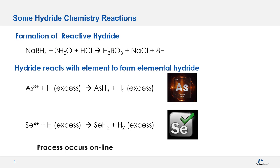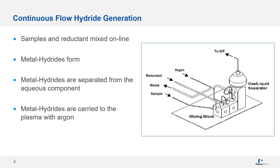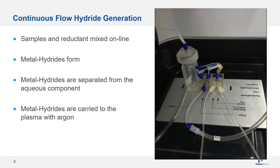To form a reactive hydride, we react sodium borohydride with hydrochloric acid, which forms our reactive hydride in excess. This active hydride then reacts with arsenic-3 and selenium-4 to form arsenic and selenium hydride, which is what gets analyzed in the plasma. When this occurs online, it's called continuous flow hydride generation — samples and reductant are mixed online. The metal hydrides form, are separated from the aqueous component in a gas-liquid separator, and are carried to the plasma while excess aqueous solution is pumped to drain.